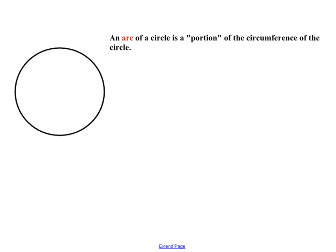So what is an arc? I got this definition from regentsprep.org. I really like it so I'm going to use it. It says that an arc of a circle is a portion of the circumference of the circle.